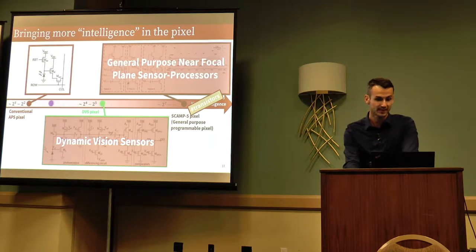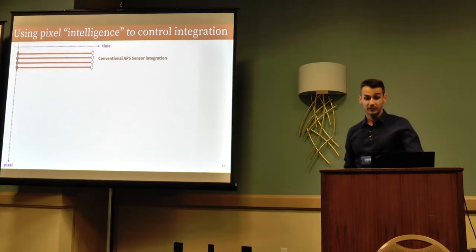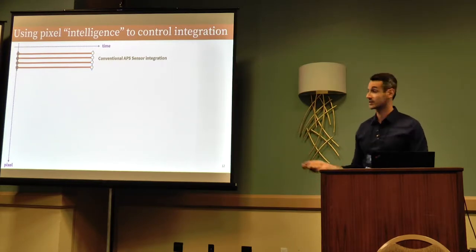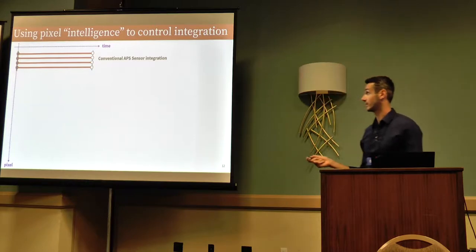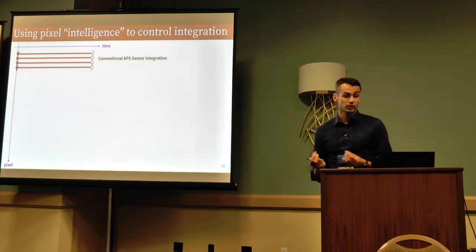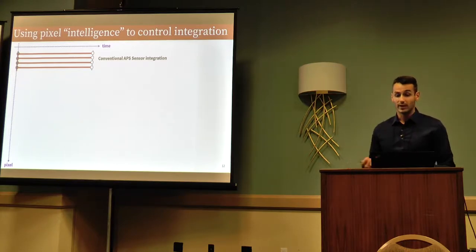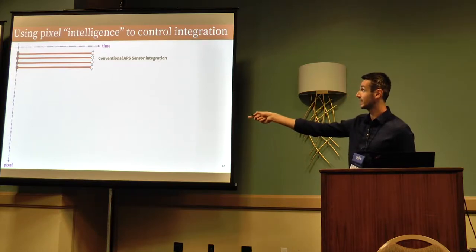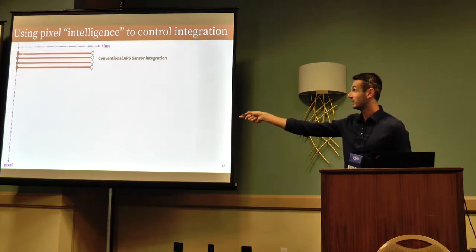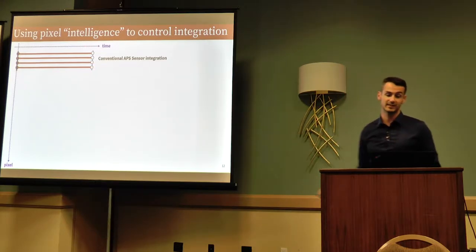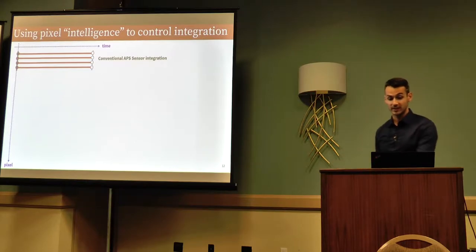Using pixel intelligence, the first thing that comes to my mind is we could start to control integration. What does it mean, controlling integration? Well, if you tell me, now, sensing and processing are together, we should be able, for instance, to say, whenever we want a pixel to stop integrating, and nothing tells me that the best way to stop integrating is to actually start integrating all my pixels simultaneously.